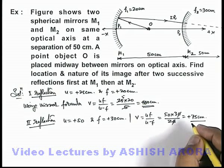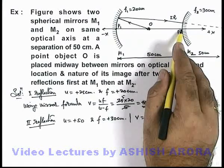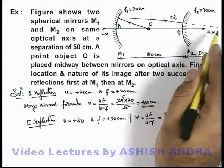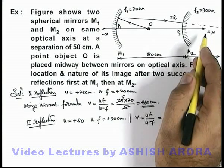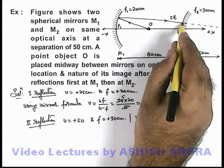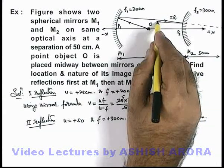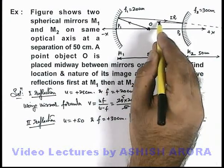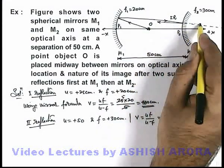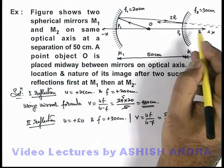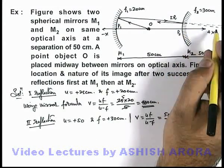The final image will be produced at the right side of pole P2 at a distance 75 centimeters. So here we can see the light rays will be reflected again in diverging manner. These are the final reflected rays which appear to come from the point at a distance 75 centimeters from pole P2.